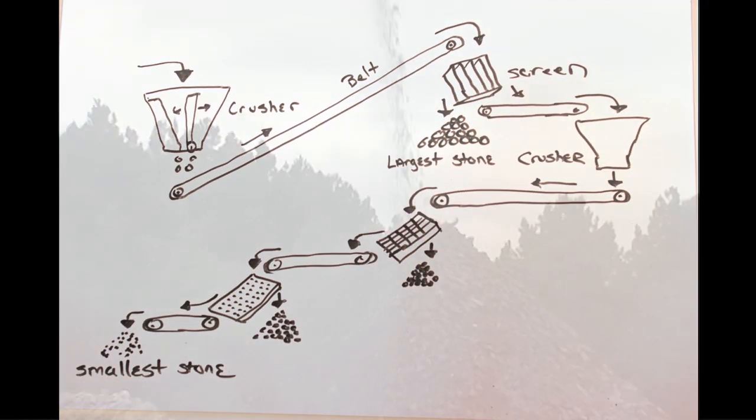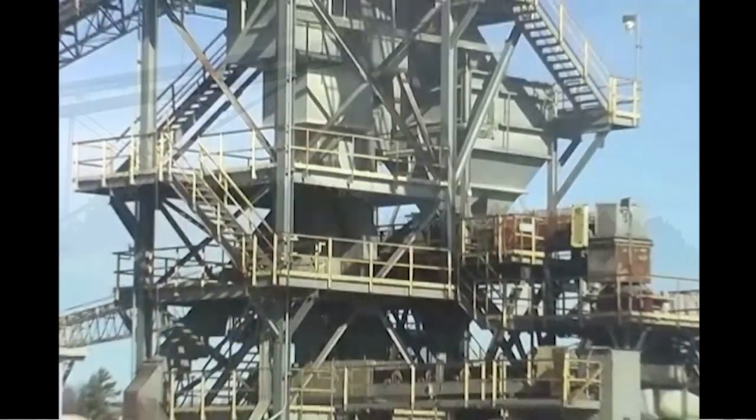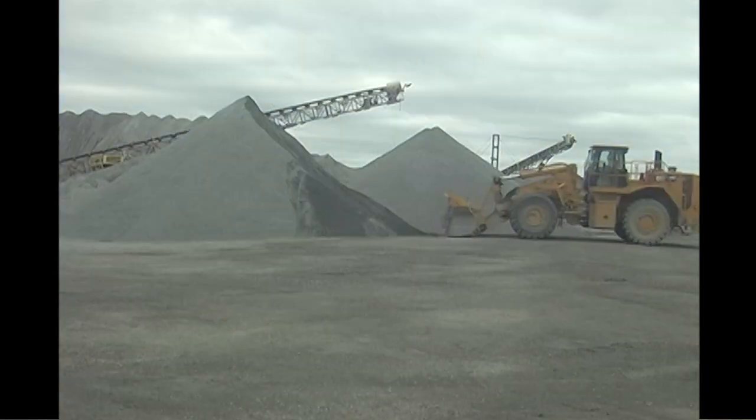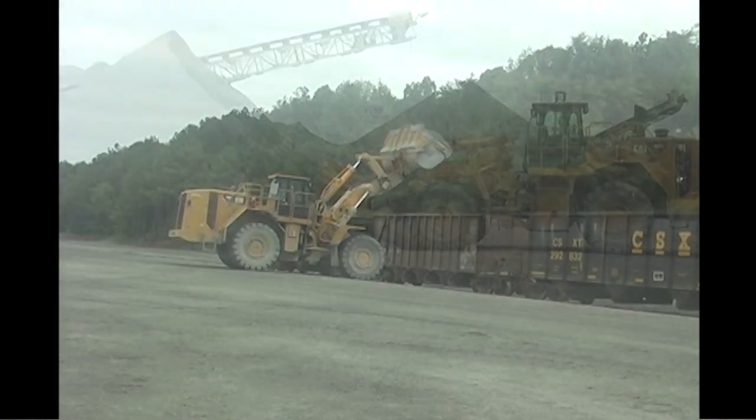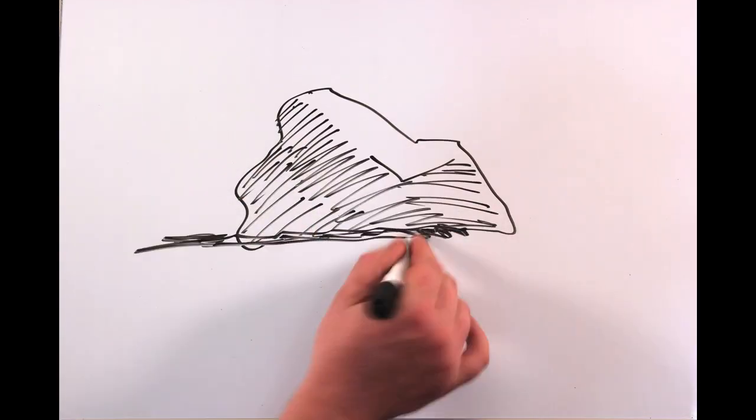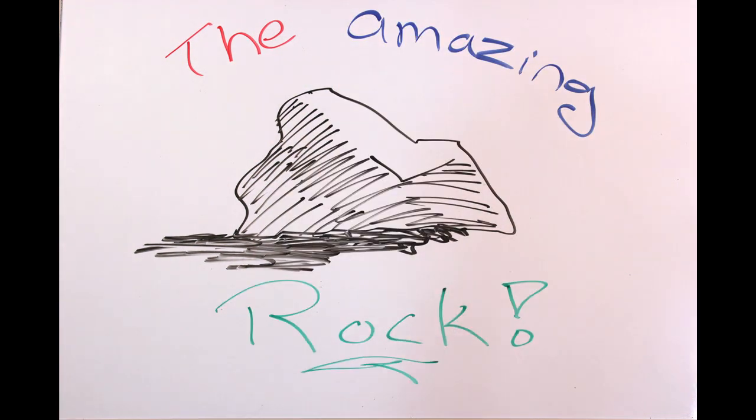Automated computers and sensors watch the plant and allow the operators to keep an eye on the entire process. Once the rock has been produced, it is then loaded onto trucks, trains, and barges to be shipped to its destination. So now you know some of the uses, history, geology, and how it's produced of the amazing, humble rock.